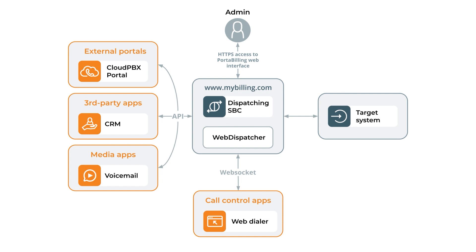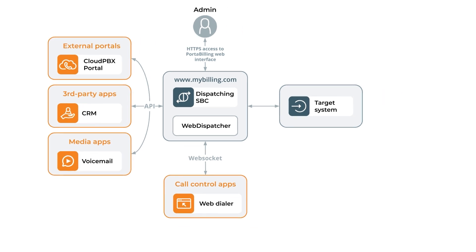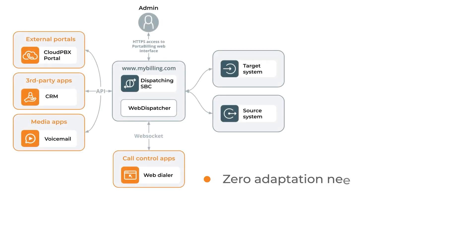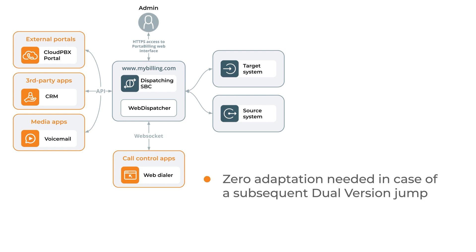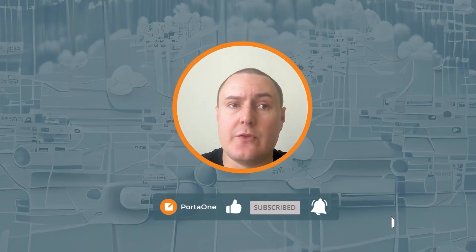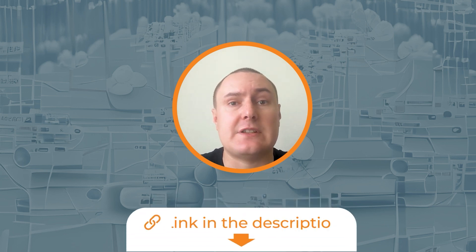What should we do about external applications when the dual-version migration is completed and the source system is turned off? When the dual-version migration is finished and you are to decommission the old source system, you will not need to make any changes to your external applications, so long as they have been built according to Portavan recommendations. This also means that when you decide to proceed with a second dual-version migration, your external application will require zero adaptation. I hope you found these answers helpful. If you have more questions about dual-version, please get in touch with our team using the information and links in this video description.